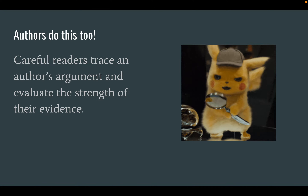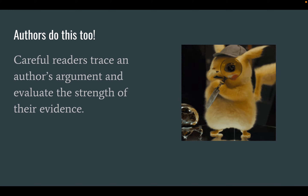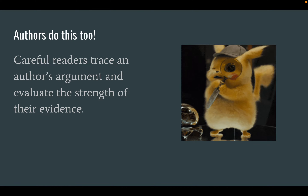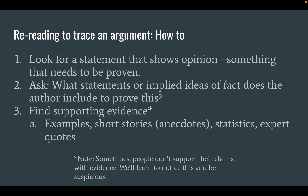Authors also make really careful arguments. A careful reader is going to trace the author's argument and evaluate — think carefully about the strength of their evidence. Here's how we're going to do this today: we'll look for a statement that shows opinion, something that needs to be proven. We'll ask what statements or implied ideas of fact the author includes to prove this, and then we'll find supporting evidence. In the future, we'll learn that supporting evidence might look like examples, short stories or anecdotes, statistics, or expert quotes. Sometimes people don't support their claims very well — we should be suspicious of unsupported claims.